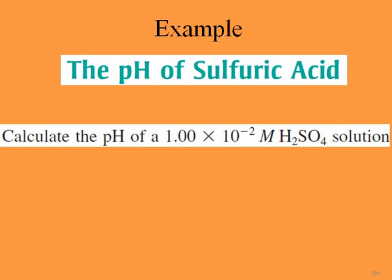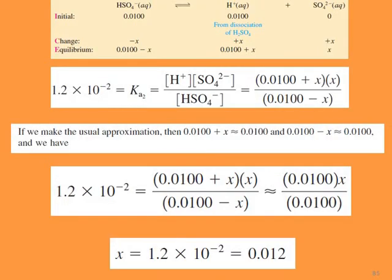Now repeat the example with H₂SO₄ concentration of 1 × 10⁻² mol/L. Since it's a strong acid, it dissociates completely, giving [HSO₄⁻] = 0.01 and initial [H⁺] = 0.01. The second reaction ICE table gives: (0.01 + x)(x) / (0.01 − x) = 1.2 × 10⁻². Using the approximation, both (0.01 + x) and (0.01 − x) ≈ 0.01, these cancel and x ≈ 1.2 × 10⁻² = 0.012.